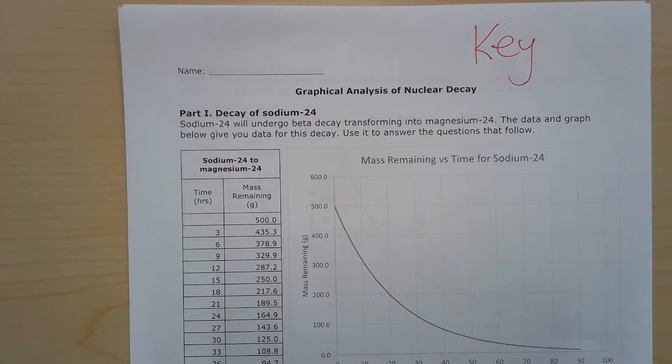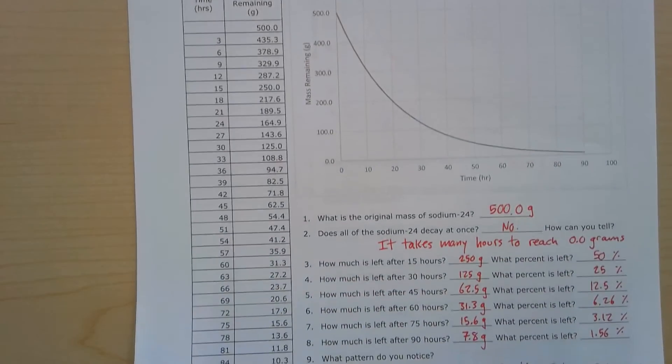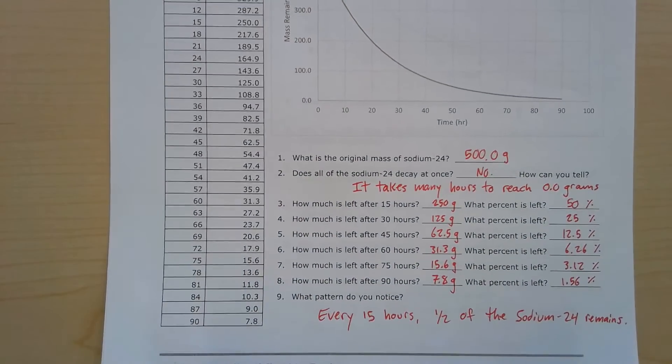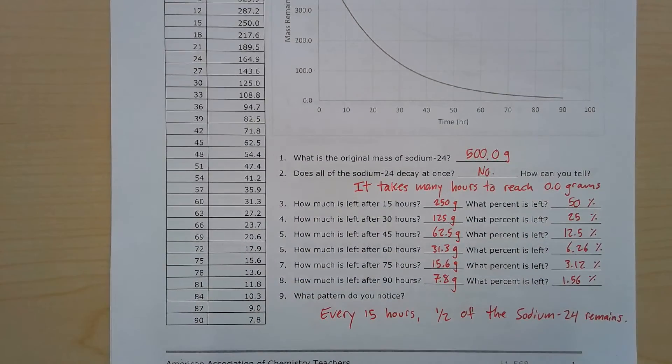So you have a graph and a table here. Both are useful. However, I think the table is the more useful of the two. Although the graph does show you what type of function we're seeing, which is an exponential decay function.